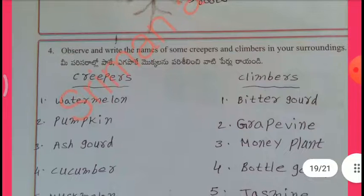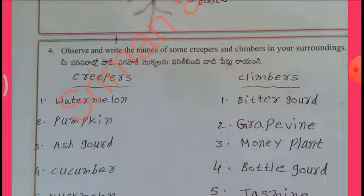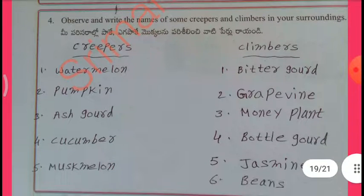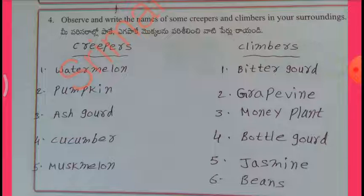Observe and write the names of some creepers and climbers in your surroundings. Creepers: Watermelon, Pumpkin, Ash gourd, Cucumber, Muskmelon. Climbers: Bitter gourd, Grapevine, Money plant, Bottle gourd, Jasmine, Beans.